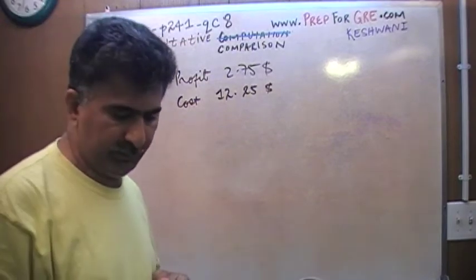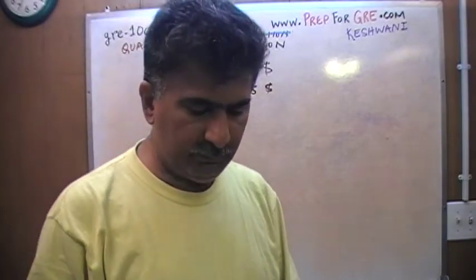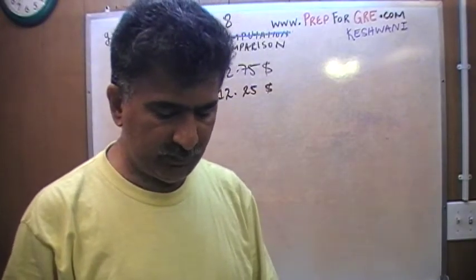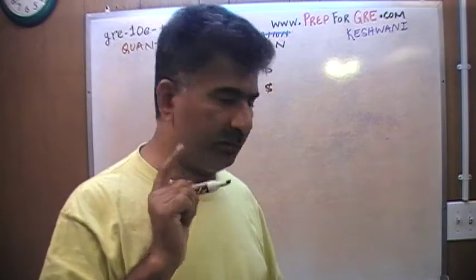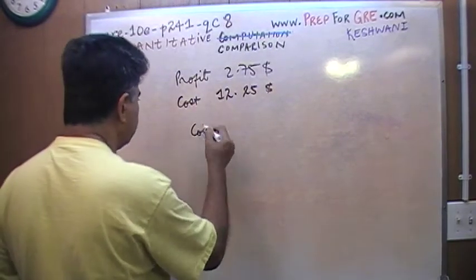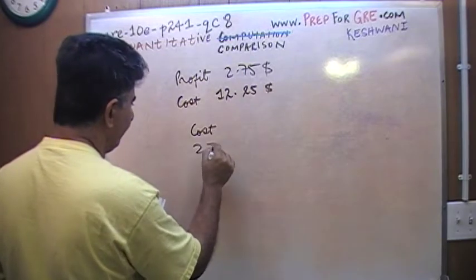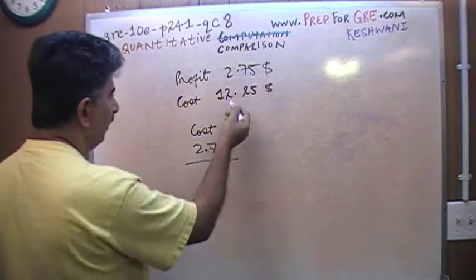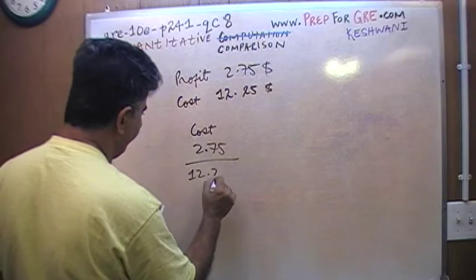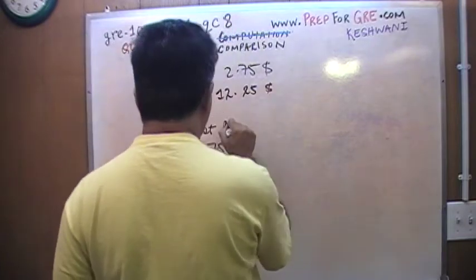Let's see what the question is asking here. In column A, they want you to express the profit as a percentage of the cost. Well, the cost is $12.25. This is your column A.